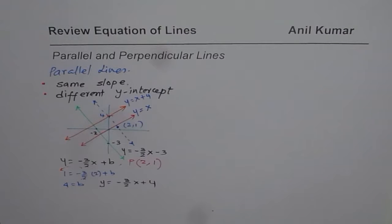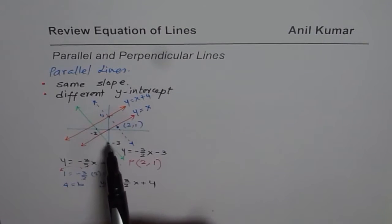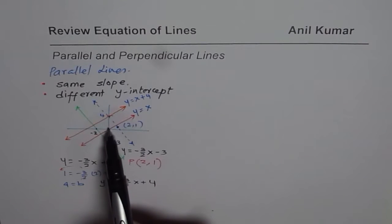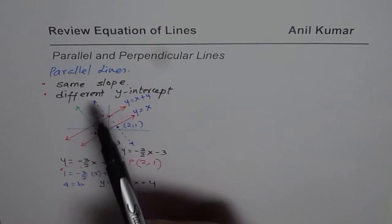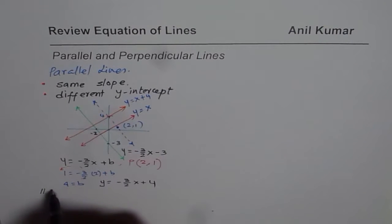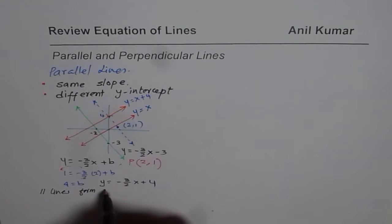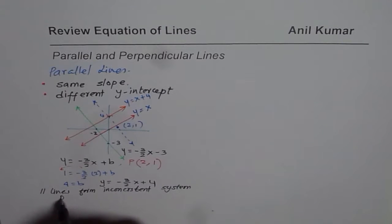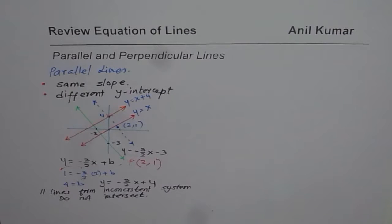Parallel lines have the same slope but different y-intercept. If the y-intercept were the same, the lines would overlap and have an infinite number of intersections. Parallel lines do not have any point of intersection — we say that parallel lines form an inconsistent system, meaning they do not intersect.